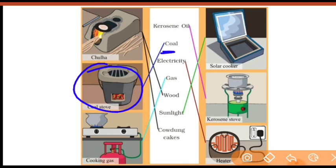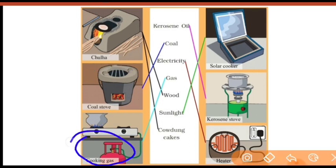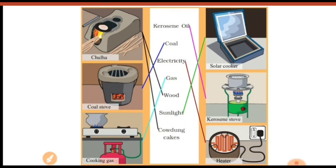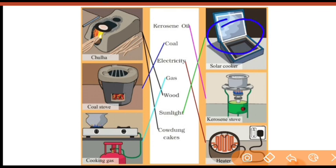Next, गैस कोल स्टोव में coal यूज करते हैं — this is a coal stove, so match it with coal. Next is cooking gas — cooking gas में gas यूज करते हैं, so match both. This is a solar cooker — solar cooker generally हम यूज नहीं करते, कहीं कहीं यूज होता है. In solar cooker we use sunlight as fuel to produce heat.